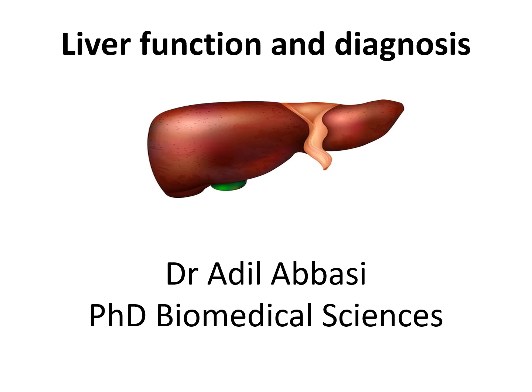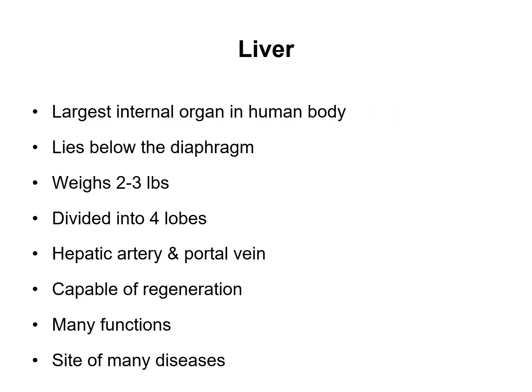Good morning and welcome to today's lesson on liver function and diagnosis. The liver is the largest organ in the human body, lying below the diaphragm. It weighs about two to three pounds and can be divided into four lobes. The main blood vessels transporting blood to and from the liver are the hepatic artery and the portal vein. The liver is capable of regeneration, so any damage is reversible, and it is the site of many diseases.